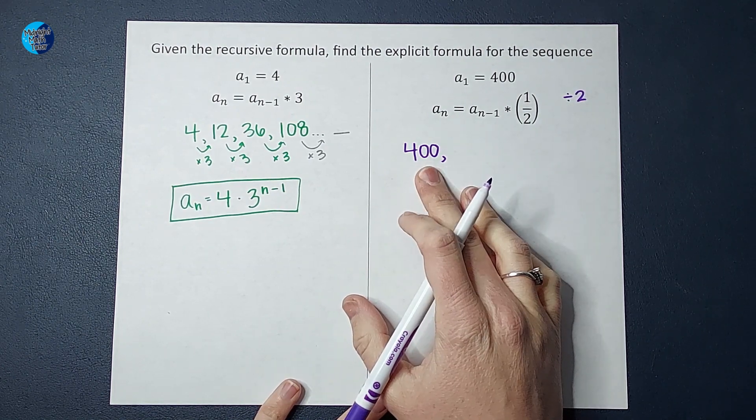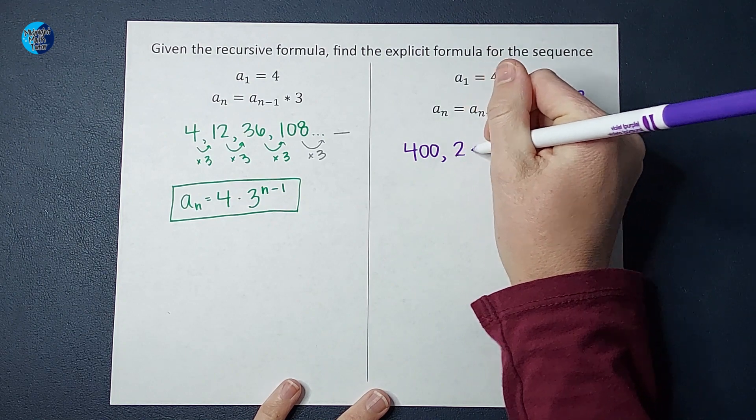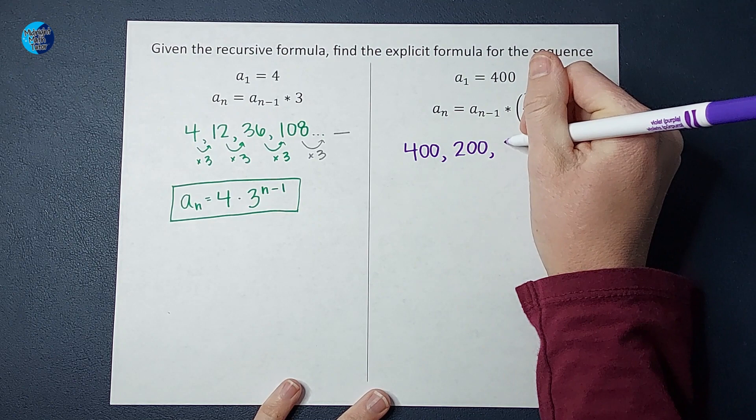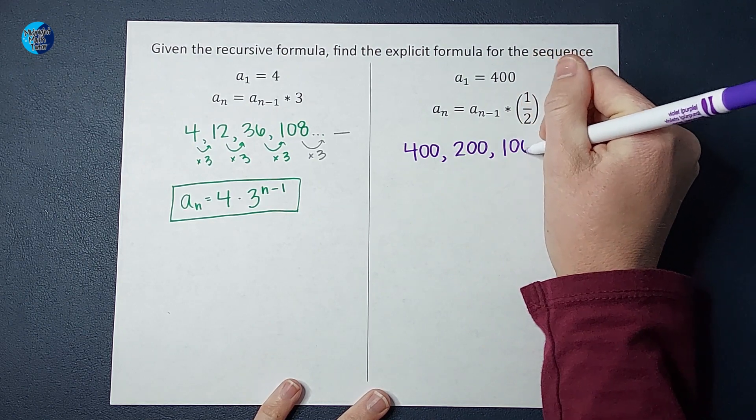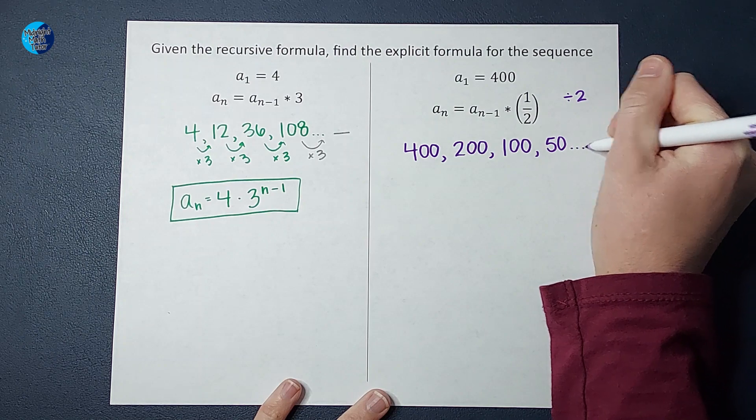So if I multiply 400 by one half or divide it by two, I get 200. Multiply by one half again, I get 100. Multiply by one half again, I get 50. Of course, I could keep going if I wanted to.